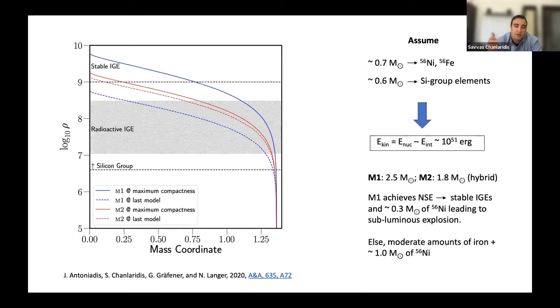So what we get is that if a transition between deflagration to detonation occurs around the maximum density, then the explosion would produce mostly stable iron group elements and only about 0.3 solar mass of nickel, which would lead to a subluminous explosion. If on the other hand, the core is allowed to expand prior to the explosion, then the detonation wave that travels through the pre-expanded material would produce only moderate amounts of iron group elements and up to one solar mass of nickel-56, assuming it will not expand any further.